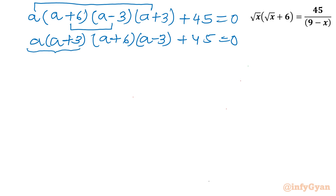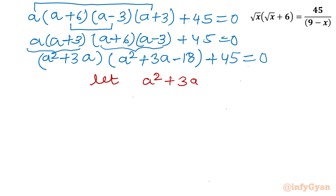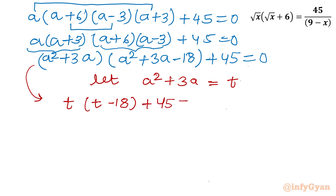Taking the product of each pair of brackets: a squared plus 3a, and a squared plus 3a minus 18, plus 45 equals 0. Now we use a second substitution: let a squared plus 3a equal to t. So our equation becomes t times t minus 18 plus 45 equal to 0, which gives t squared minus 18t plus 45 equal to 0.